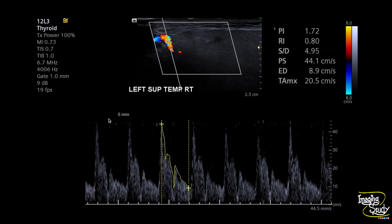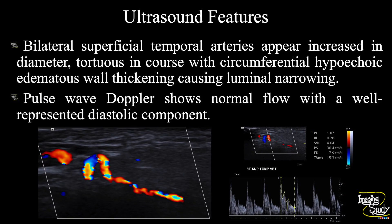The peak systolic velocity on the left side was around 44 cm per second with a good diastolic flow here also. In summary, bilateral superficial temporal arteries appear increased in diameter, tortuous in course, with circumferential hypoechoic edematous wall thickening causing luminal narrowing. Pulsed-wave Doppler shows normal flow with a well-represented diastolic component, suggesting a case of Giant Cell Arteritis.